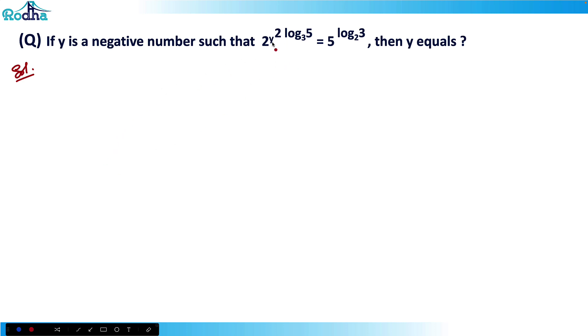So the question says that y is a negative number such that 2 raised to y square, it is 2 raised to y, that is y square log 5 base 3 is equal to 5 raised to log 3 base 2, then y equals to what?